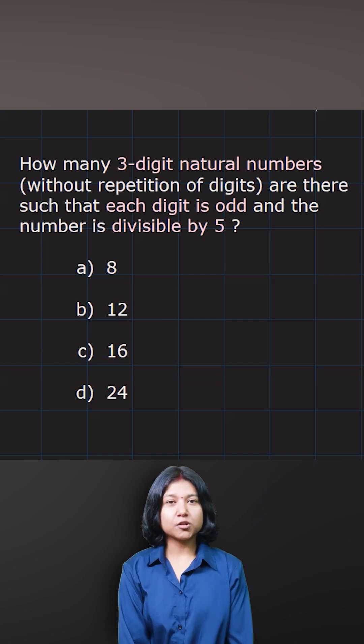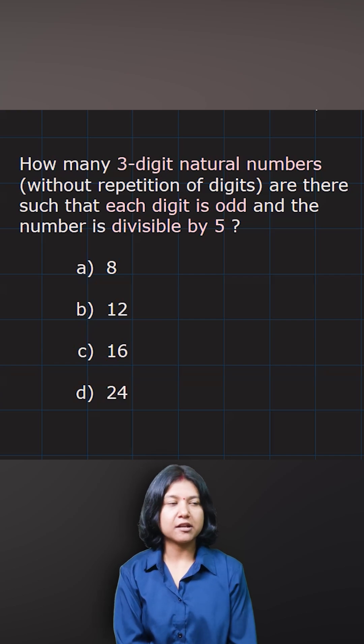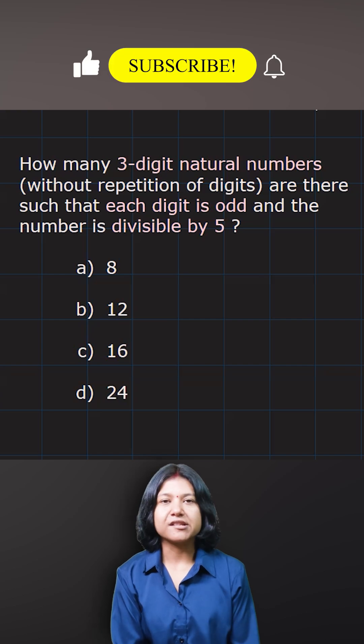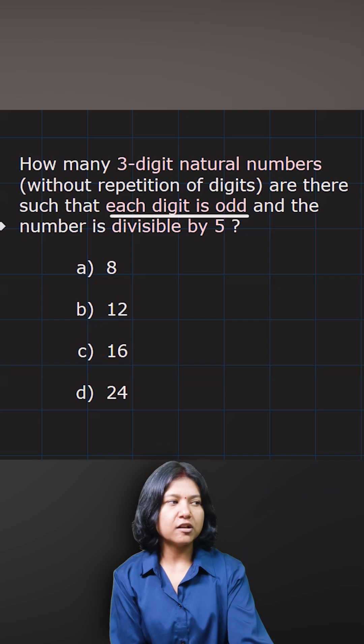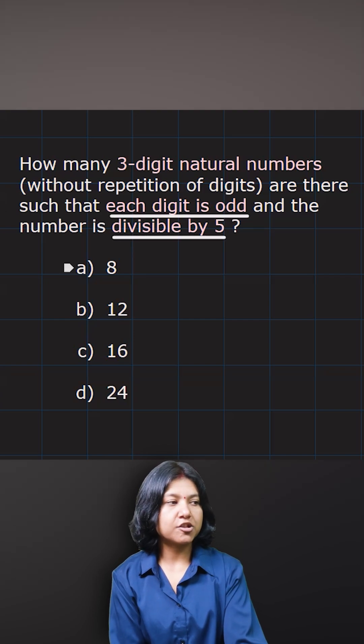The question wants you to find the total number of three-digit natural numbers such that each digit is odd and the number is divisible by five. Note that we want to use only odd digits, we want the number to be divisible by five, and we are making a three-digit number.